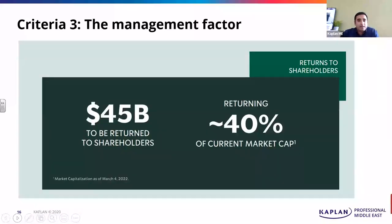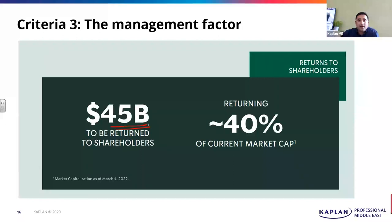This is a screenshot from Starbucks investor presentation. Till date, they have returned around $45 billion back to shareholders. They have announced stock buyback plans. Although very recently they had canceled the buyback plan, till date they have announced huge buybacks in the past. I'll show that in the cash flow statements also. And going further, they have announced huge buybacks. These are seen as good signs where companies don't enter into needless acquisitions.